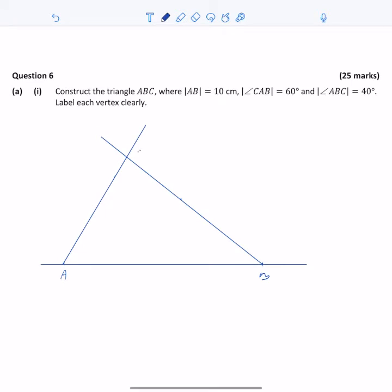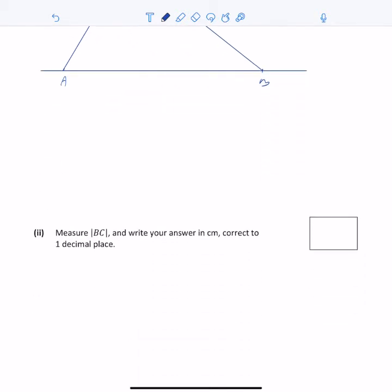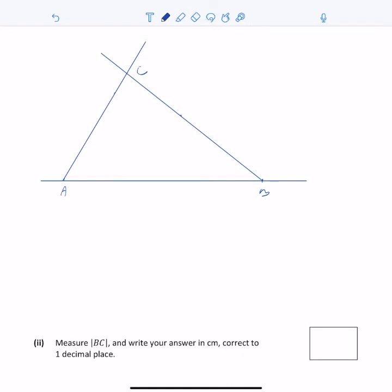The intersection forms vertex C. That's the construction done. For the next part of the question, I have to measure the length of segment BC correct to one decimal place.